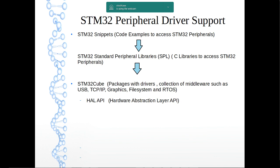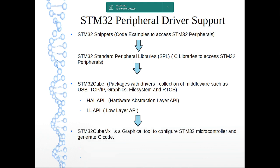STM32 Cube is divided into two parts: the Hardware Abstraction Layer API, where the user doesn't need to worry about which specific STM32 microcontroller is being used, and a Low Layer API for direct register access — similar to the earlier Standard Peripheral Libraries. To further reduce time-to-market, ST provided STM32CubeMX as a graphical tool to configure STM32 microcontrollers and generate C code.